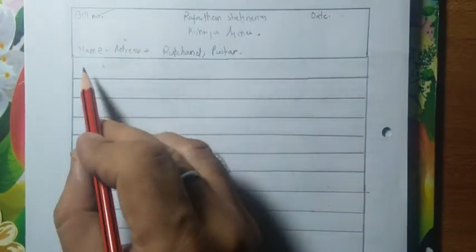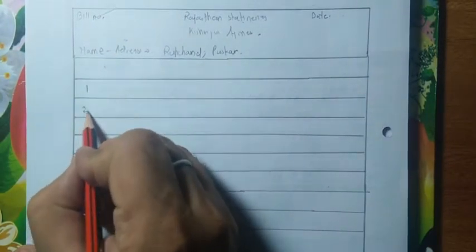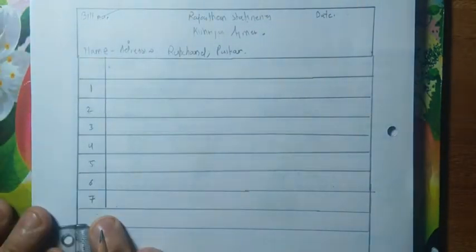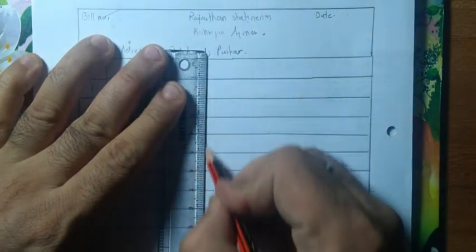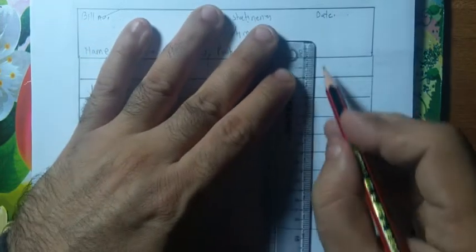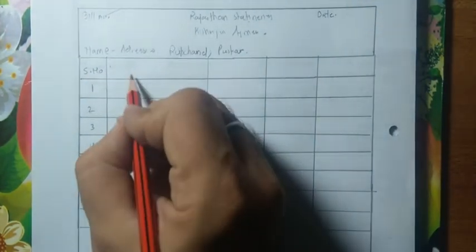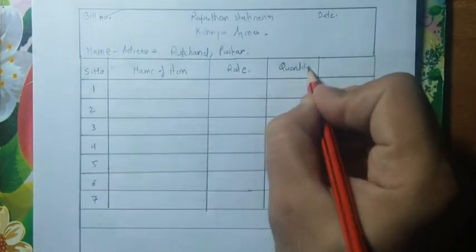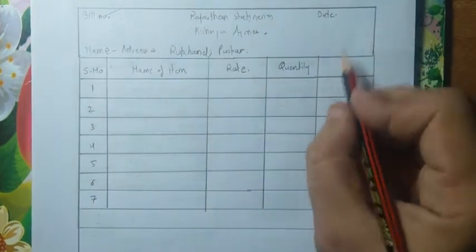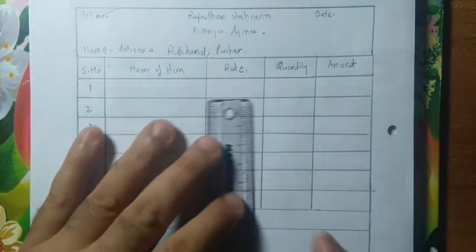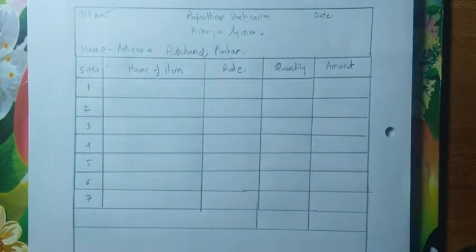After this we come to the main block. In this block, first write the serial number. We had 7 items total, so you write 1, 2, 3, 4, 5, 6, 7 — leaving one row at the top. Then comes the name of items, the rate of items, and the quantity of items. These three things — item name, rate, and quantity — are given in the question. We fill those in, and the last column is the total amount which we calculate. At the very bottom we write the grand total.